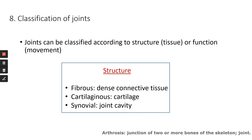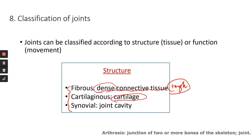The next topic is about joints. Based on structure, we can classify joints into three categories. The first is fibrous joints — bones are held together by dense connective tissue, a really tough type of connective tissue that holds your bones together so they don't separate. Second, cartilaginous joints — cartilage connects the bones. The third and most complex type is the synovial joint, the most common joint everyone is familiar with, which has a joint cavity.